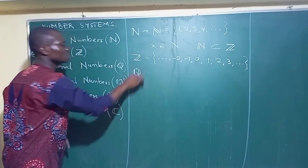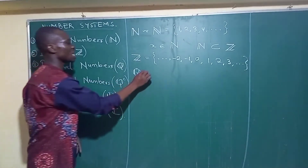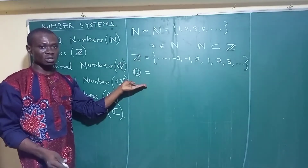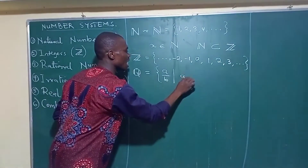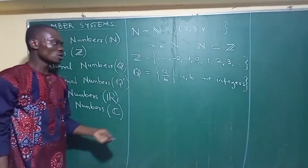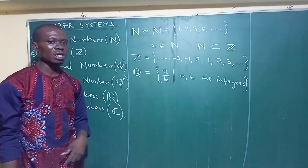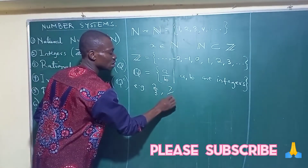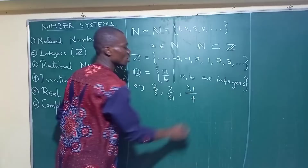The next is a type of numbers we call the rational numbers. We represent them with the symbol Q. We say that they are numbers that can be represented as fractions — any number that you can write as a fraction is a rational number. We say they are numbers that can be represented in the form A over B, where A and B are integers. So numbers that can be represented as fractions where your numerator is an integer and your denominator is an integer are called rational numbers. Examples include 2 over 3, 7 over 31, and 21 over 4.